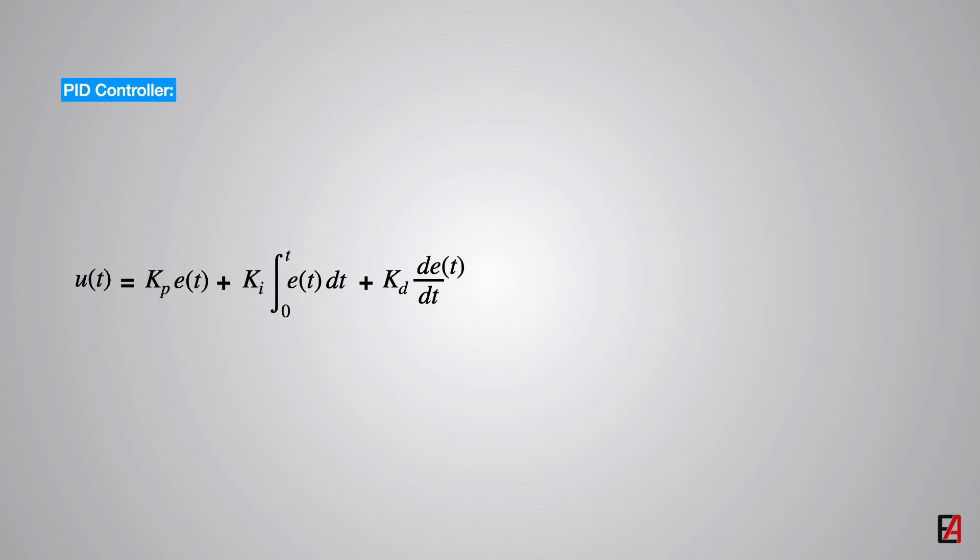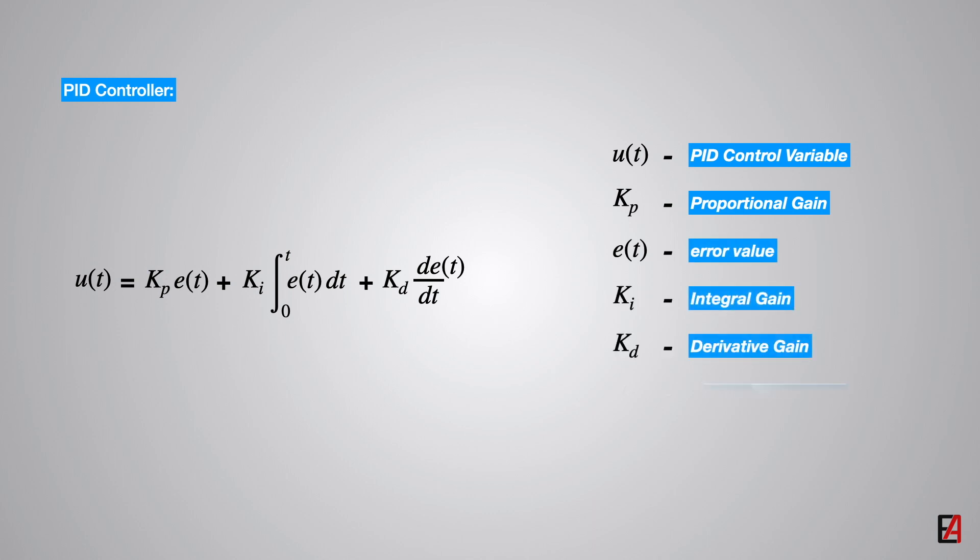In this equation, Kp represents proportional gain, Ki represents integral gain, and Kd represents derivative gain.